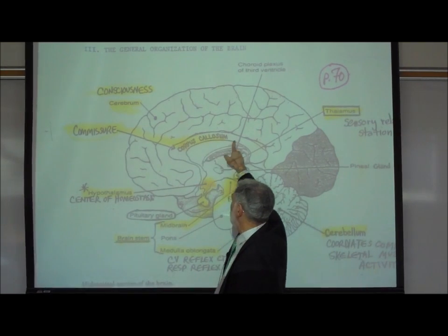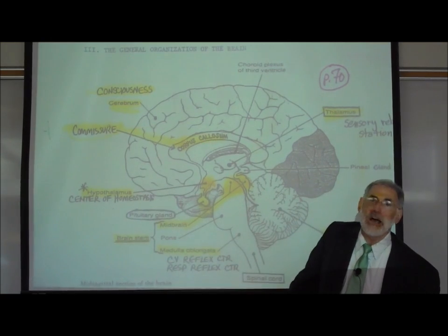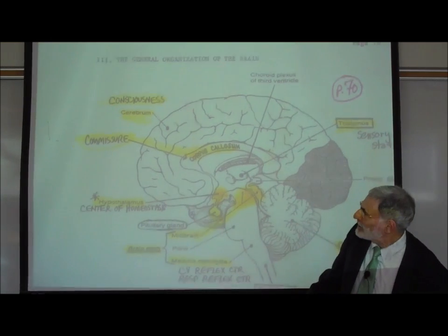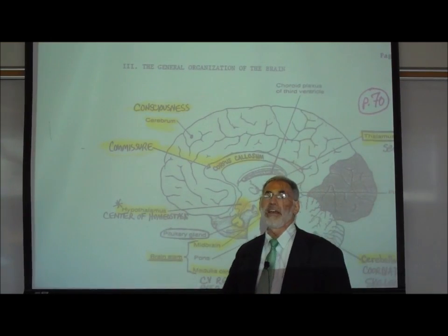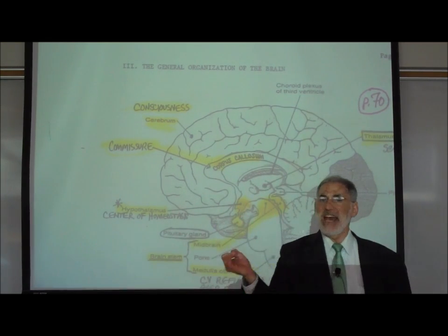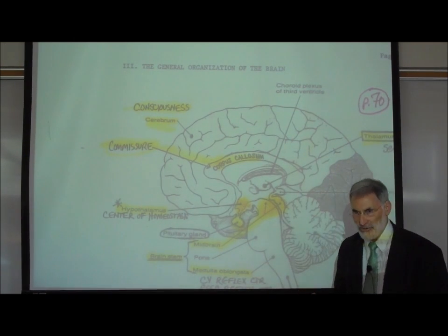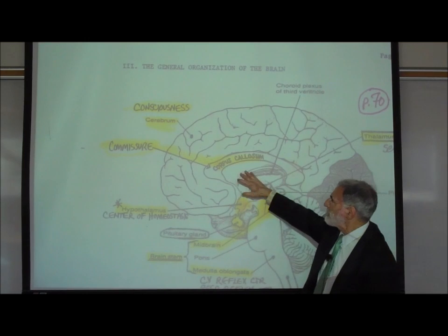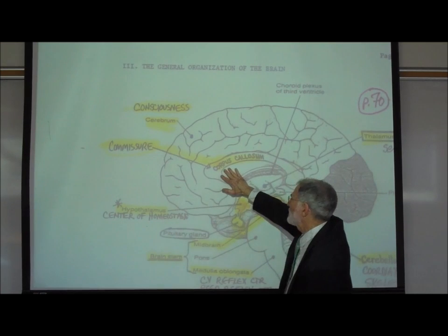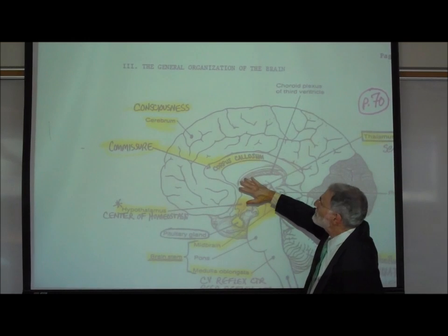The corpus callosum is the largest commissure in the central nervous system. A commissure is a location where there are many nerve fibers that decussate or cross between the right and left sides of the central nervous system. The corpus callosum, which literally means big body, is the location of about 300 million myelinated nerve fibers that link the right and left sides of our brain together.